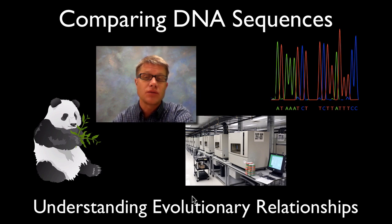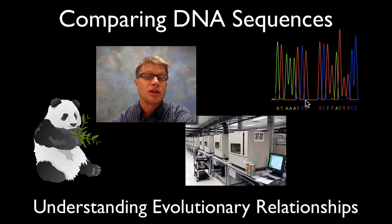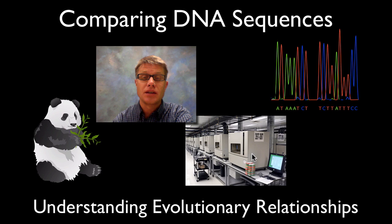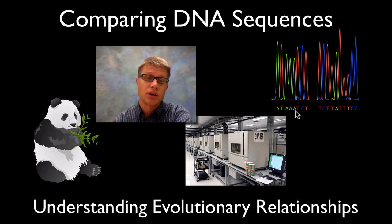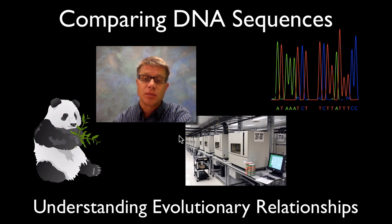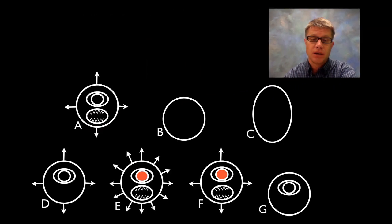One of the biggest revolutions in biology, especially over the last 50 years, has been the idea that we can sequence DNA. These are gene or DNA sequencers — basically they can figure out the letters in the DNA. And then we can compare DNA from different organisms. We've sequenced the human genome but we're also working on other animals, which allows us to see how related we are, for example, to a panda bear.